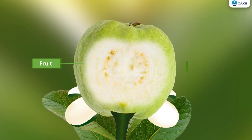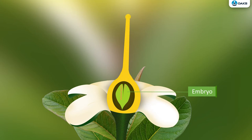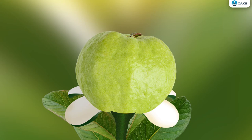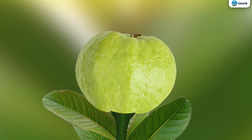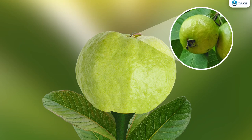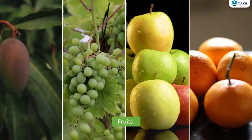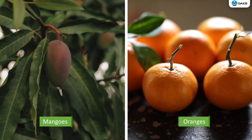After fertilization, the ovary ripens to become the fruit and the ovules develop into seeds. The zygote develops into an embryo which is surrounded by a protective seed coat. The other parts such as sepals and petals dry out and fall off as the flower forms the fruit — you may see remains of sepals in guava, the green part at the top. Fruits may be fleshy or juicy such as mangoes and oranges, or hard such as almonds and walnuts.